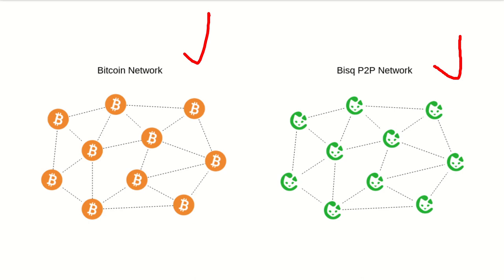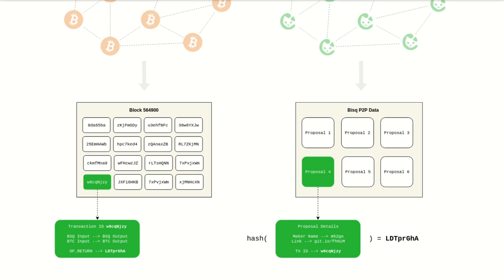Now let's take a look at how that looks and why both components are so important. Here is a basic depiction of a proposal in the BISC DAO. On the left you can see how it's stored on the Bitcoin blockchain, and on the right you can see how it's stored on the BISC peer-to-peer network.